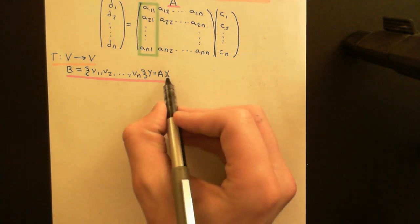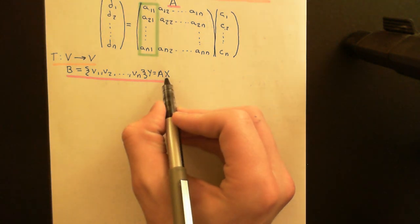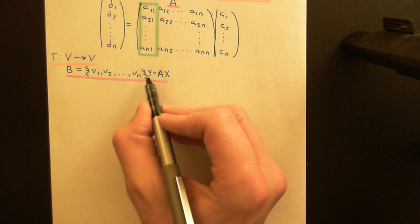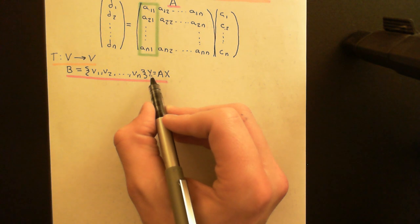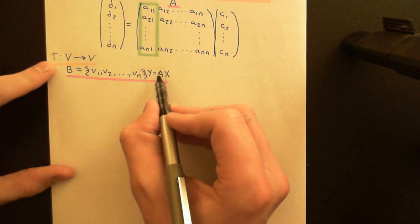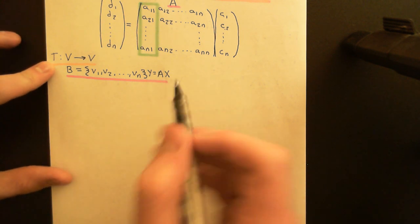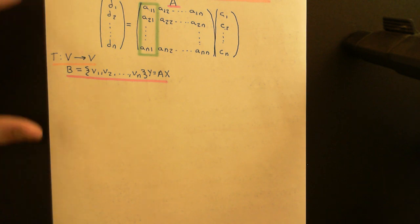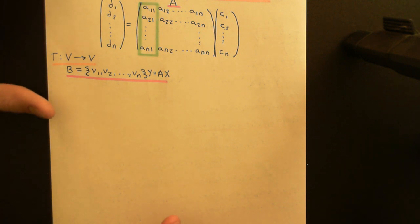The vector whose coordinate vector is X would be mapped onto the vector whose coordinate vector is Y in the codomain vector space by the linear operator T, and therefore the matrix is capturing the linear operator.